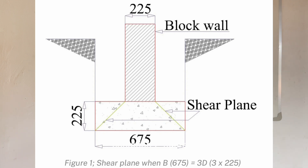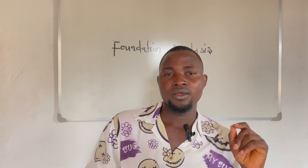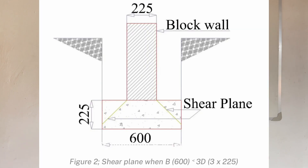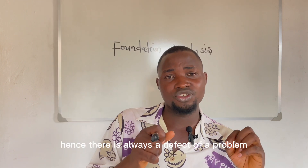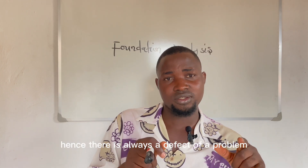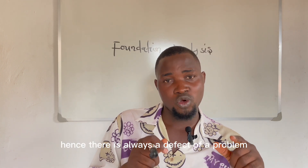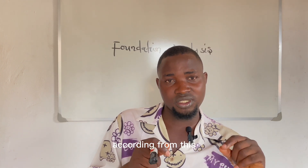Condition 2, figure 2. In this condition, B is less than 3D. The width of the foundation provided is less than the required width. Hence, there is always a defect or a problem occurring from this.